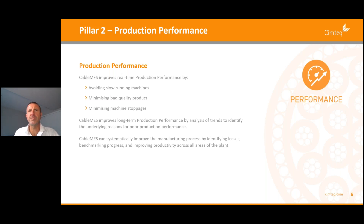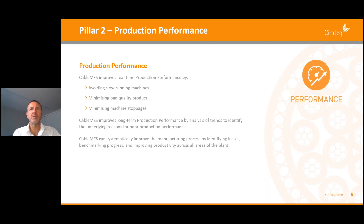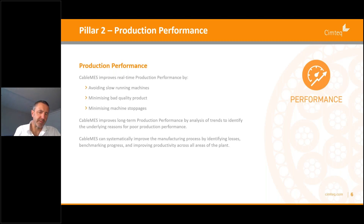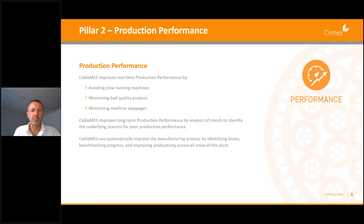Through connectivity to all machines on the shop floor, Cable MES allows real-time visibility. By running reports and analyzing data points, you can figure out which machines are causing problems or running slowly to maximize throughput. Minimizing bad quality product is also addressed through quality management, and machine stoppages are reduced because you can monitor what's happening on the shop floor in real time.